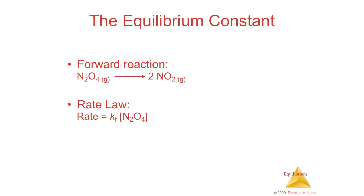Section 15.2, the equilibrium constant. From chapter 14, you realize that if you had a reaction, there is some rate or some speed that that reaction will go based upon the concentration of your reactants. So how much concentration you have will determine how fast it's going.